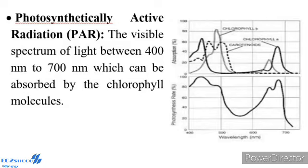However, this direct relationship is not seen at higher light intensity. At higher light intensity, the rate of photosynthesis decreases because when the intensity of light falling on the leaf increases beyond a point, chlorophyll is destroyed. This occurs in the presence of oxygen and is called photo-oxidation.